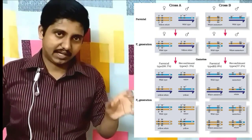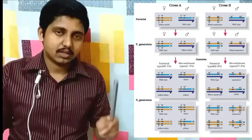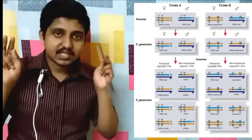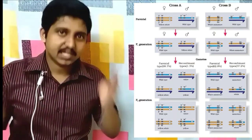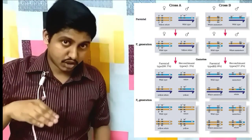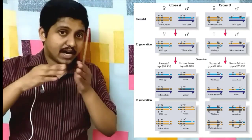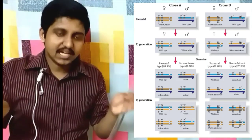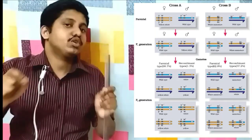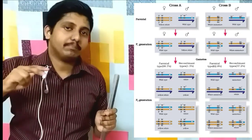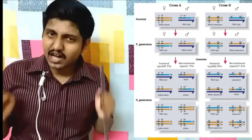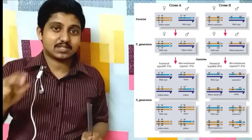The conclusion is: if two genes are closely linked, a lesser proportion of recombinants is produced. If the genes are loosely linked, the proportion of recombinants is higher.